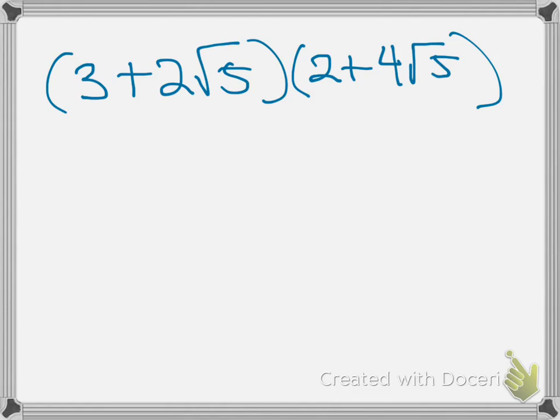So in order to multiply these two guys together, we multiply the first two terms: 3 times 2 gives us 6. Then we multiply the outside terms: 3 times 4 radical 5 is 12 radical 5.